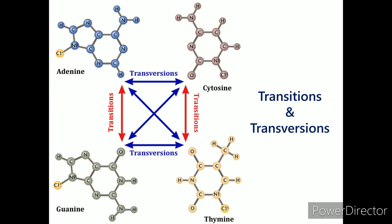Transition occurs when a purine is substituted with another purine, or when a pyrimidine is substituted with another pyrimidine. Transversion occurs when a purine is substituted for a pyrimidine, or a pyrimidine replaces a purine.